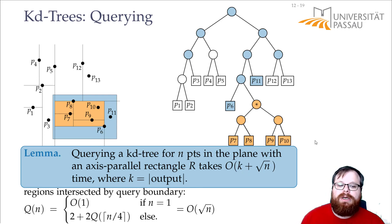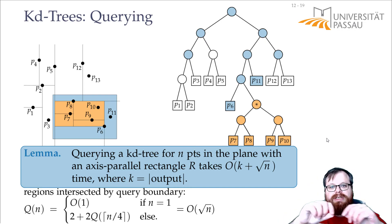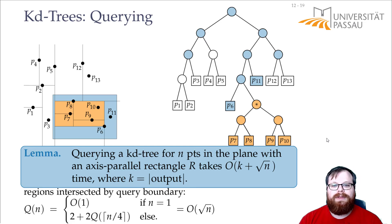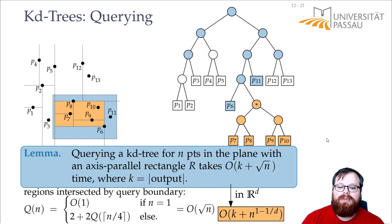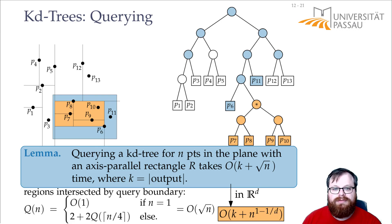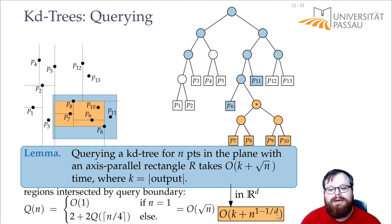So the total query time is O(k + √n). This extends to higher dimensions: if we have more than two dimensions, we split in dimension 1, then dimension 2, then dimension 3, and so on, cycling back to the beginning. This builds a binary search tree where each step halves the number of points. The query time generalizes to O(k + n^(1−1/d)). For d=2, that's n^(1/2) = √n. For d=3, it's n^(2/3), the cube root of n². For d=4, it's the fourth root of n³, and so on — approaching O(n) as d grows large.